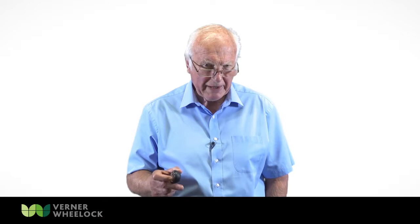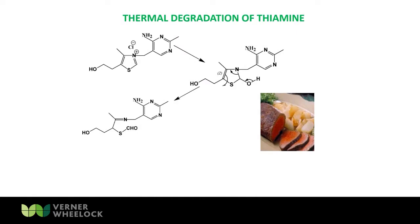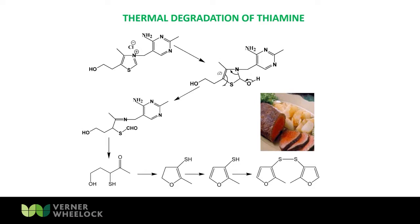But that's not the end of the story, because it's also formed by other means — the thermal degradation of thiamine. Thiamine is a loner; it breaks down on its own and doesn't need anything to react with. Under the pyrolysis conditions in the oven when beef is being roasted, the thiazole ring breaks open, a fragment drops off, a hydroxymercapto ketone is formed, this cyclises, and we get 2-methyl-3-furanethiol — and then the bis-disulfide, that very powerful compound.